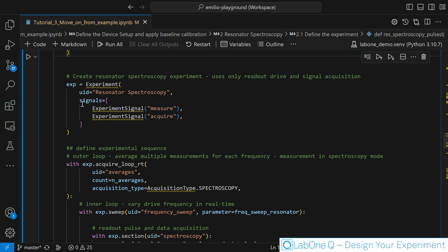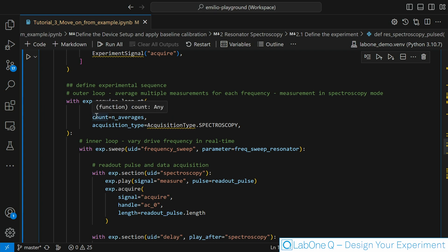After that we are defining our experiment. In this case it is a pulse spectroscopy and it just needs two signal lines: one measured line to send the RF signal to the cavity and an acquired line to integrate the reflected signal. After that we are opening our experiment using an acquired loop RT. This effectively defines the T0 of our experiment. From here on all this instruction will happen inside the device. We are using the acquired loop RT instruction to also pass some important metadata. For example the number of averages that you wish to do in your experiment and also what is the acquisition type. In this case I am using the acquisition type spectroscopy.